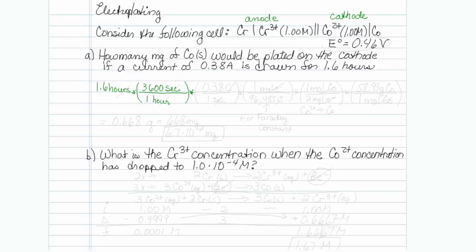My next ratio involves amps, which is a coulomb per second. 0.38 coulombs per 1 second is my amperage. Now I am to coulombs.